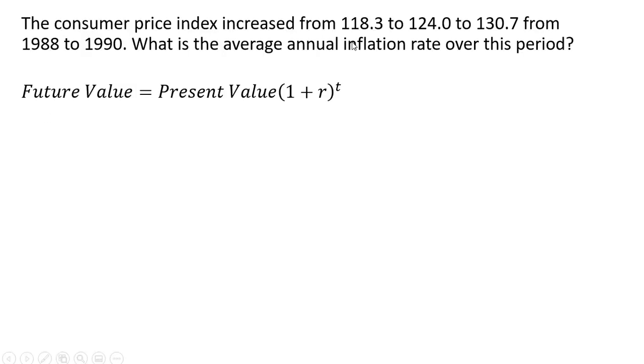The Consumer Price Index increased from 118.3 to 124 to 130.7 from 1988 to 1990. What is the average annual inflation rate over this period?